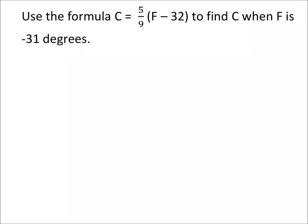So let's go ahead and use this formula. C is Celsius degrees, and F is Fahrenheit degrees. We'll find the Celsius when the Fahrenheit is negative 31 degrees. So let's go ahead and write this equation out.